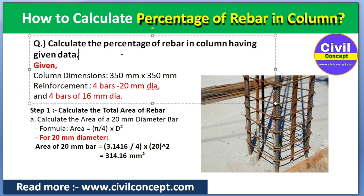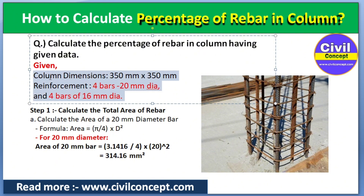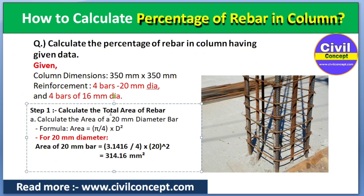The question is: calculate the percentage of rebar in a column with the given data. The column dimension is 350mm by 350mm — its length and width are both 350mm. The reinforcement used is four bars of 20mm diameter at the corners of this column, and four bars of 16mm diameter at the mid of this column.